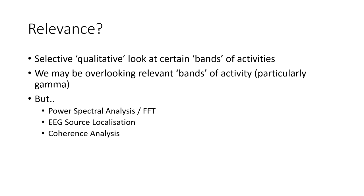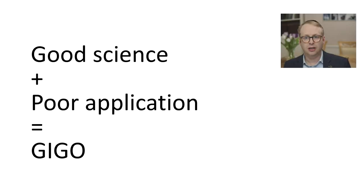What's the relevance of all of this? In terms of the standard EEG we are taking a qualitative look at certain bands of activities and we may be overlooking relevant bands of activities, particularly the faster ones. But we can extend our reach by doing power spectral analysis or fast Fourier transforms, EEG source localization and coherence analysis.